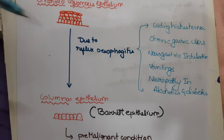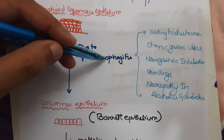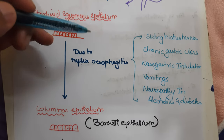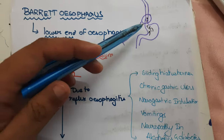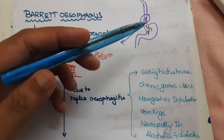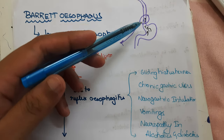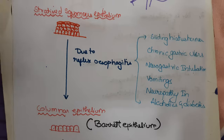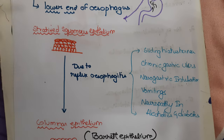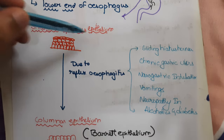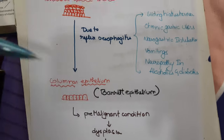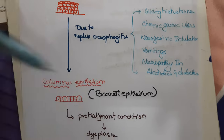Reflux esophagitis means there is reflux of the gastric juice into the esophagus. Due to repeated reflux into the esophagus, there are changes in the epithelium — a change from stratified squamous epithelium to columnar epithelium.